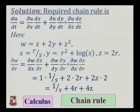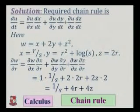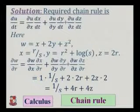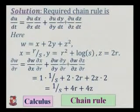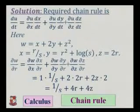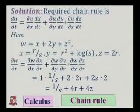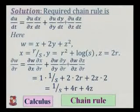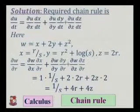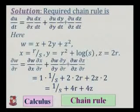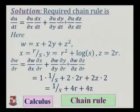Here, w is a function of x, y and z, and x, y and z are functions of r and s. We have already seen the tree diagram and from that formula, del w by del r equals del w by del x into del x by del r, plus del w by del y into del y by del r, plus del w by del z into del z by del r.